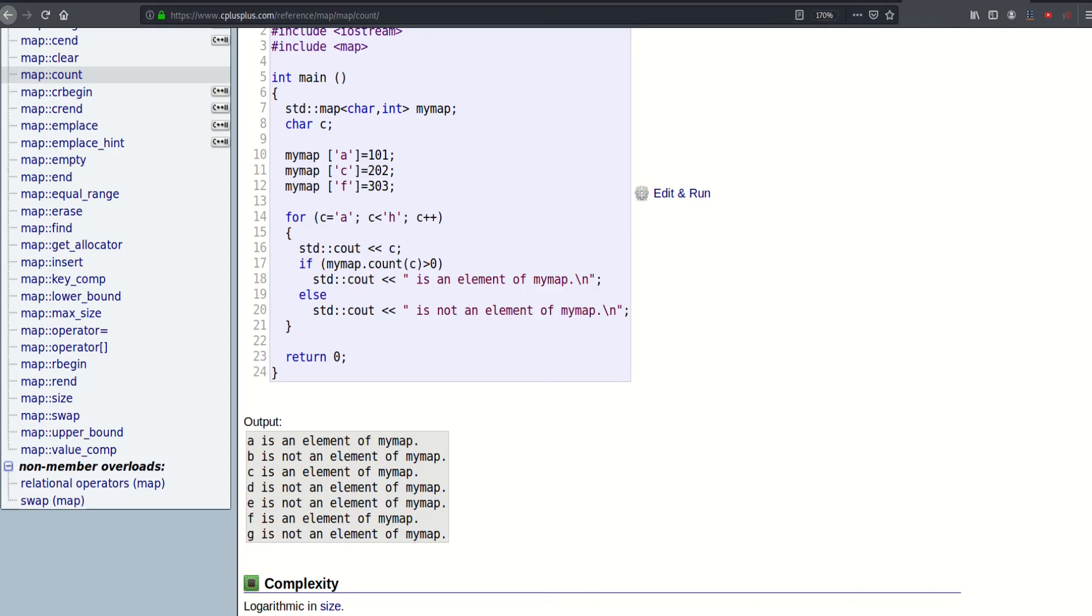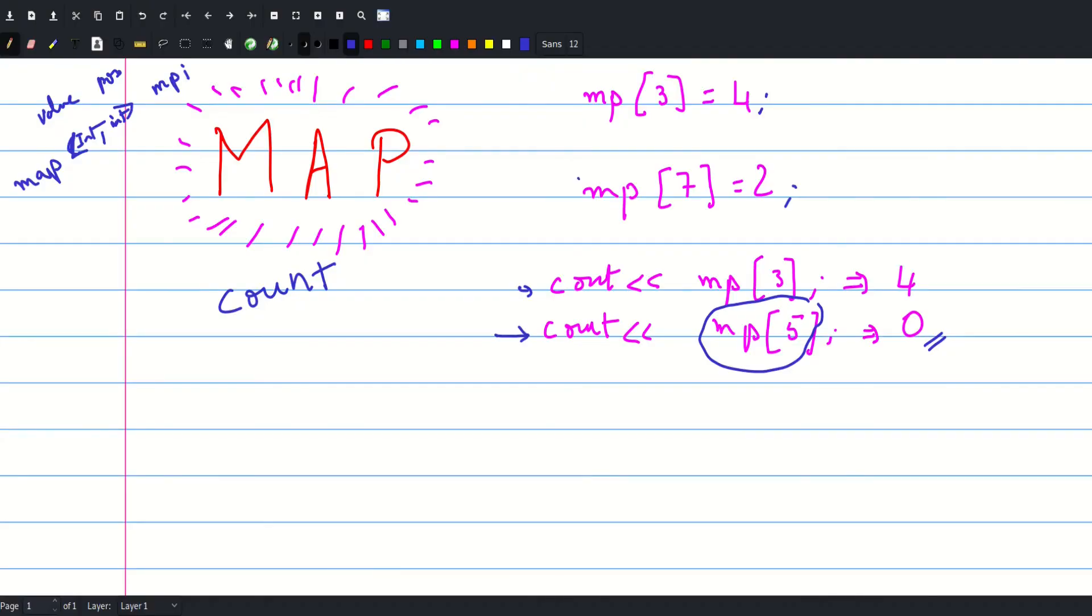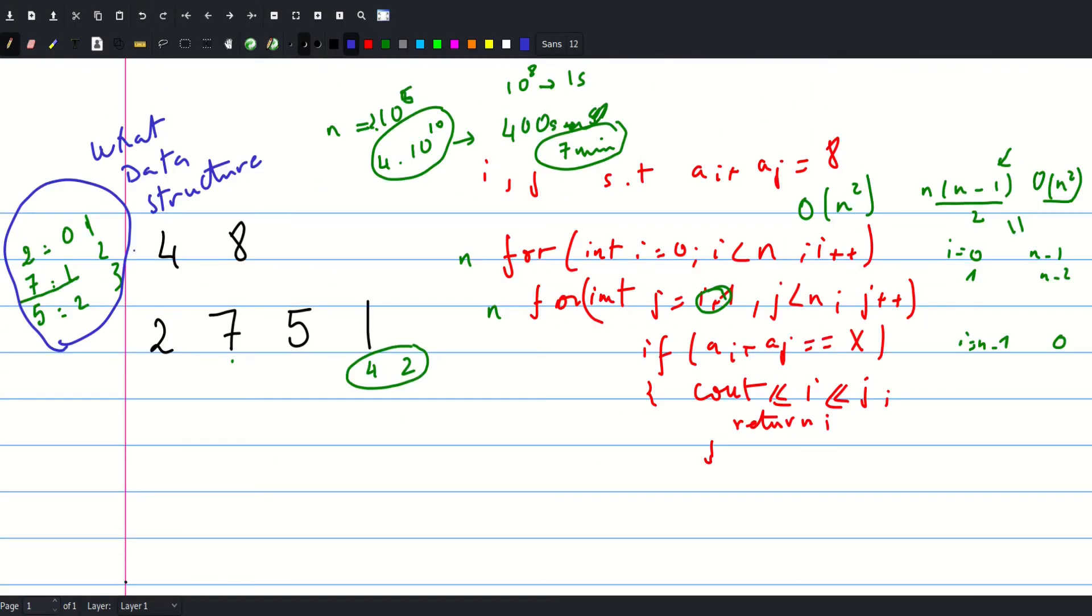So that's it. For our problem, we are pretty much done. We would just use a map to keep track of the values that we saw. And then we will go through all the elements in our array. And when we find that an element here has value alpha and x minus alpha belongs to our map, then we are done. We just gonna print both indices.